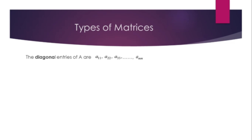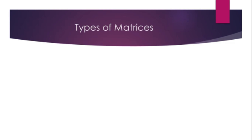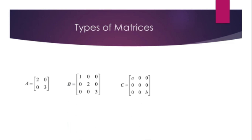Diagonal matrix: The diagonal entries of A are A_11, A_22, A_33, ..., A_mm. A square matrix in which all non-diagonal entries are 0 is called a diagonal matrix. For example, matrix A (2×2) has diagonal entries 2 and 3; matrix B has diagonal entries 1, 2, 3; matrix C has diagonal entries a, 0, b.